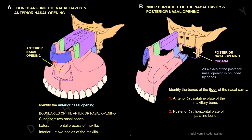This is the anterior nasal opening. Superiorly, two nasal bones bound this cavity, and on each side is the frontal process of the maxilla. Inferiorly are the bodies of the two maxillae.